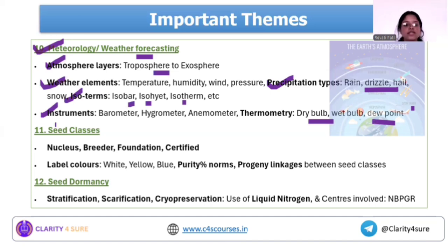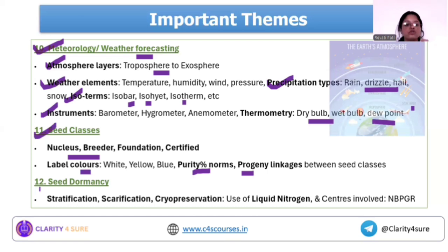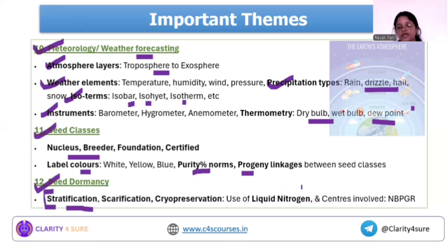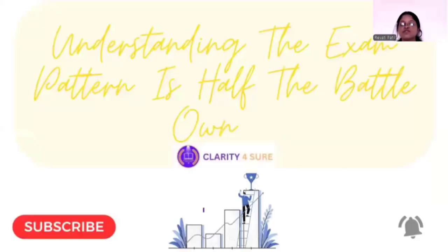The next important thing is seed classes — cover the chronology of which class is the progeny of which, the label/color tags of each seed class, and the purity percentages. The last topic is seed dormancy, which is again repeated in PYQs. Go through stratification, scarification, and cryopreservation. These are the important themes, and this was it for the microanalysis.